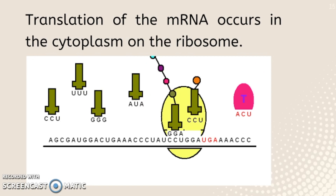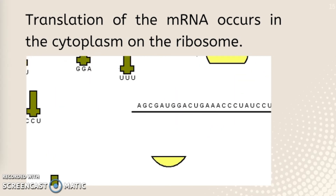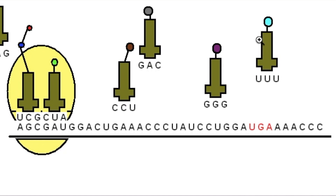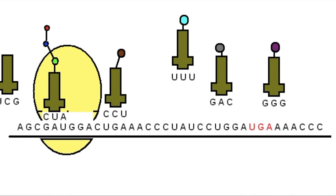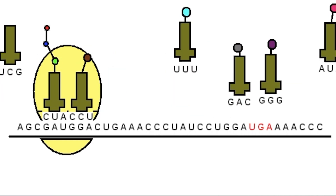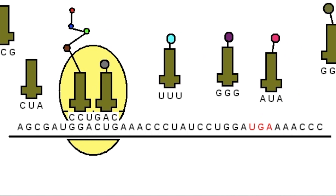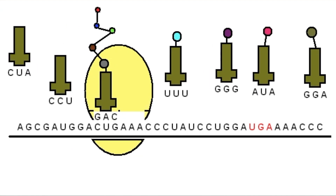Translation occurs in the cytoplasm on the ribosome. In prokaryotic organisms, transcription is coupled to translation, so translation can begin while transcription is still in progress. In eukaryotic organisms this happens in entirely different locations — transcription occurs in the nucleus, translation occurs in the cytoplasm on the ribosome. Prokaryotic organisms do not have a membrane-bound nucleus. Translation involves energy and includes steps of initiation, elongation, and termination. The tRNA brings the correct amino acid to the correct place on the mRNA. The amino acid is transferred to the growing polypeptide chain and this process continues until a stop codon is reached, terminating by release of the newly synthesized polypeptide.